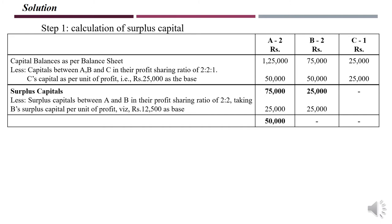After paying the 1 lakh surplus capital, the partners' capitals will be 50,000, 50,000, and 25,000 — which is in the ratio 2:2:1. From that point onwards, whatever surplus realized value remains is distributed according to their profit sharing ratio, which is also the capital ratio.